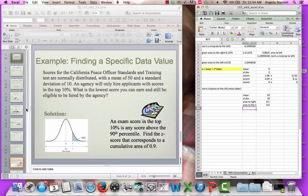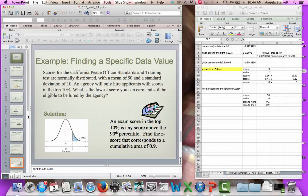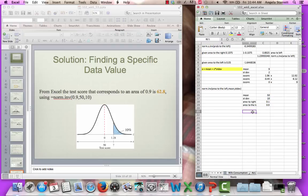We can use Excel. So I'm going to say equals norm.inv. We can see Excel always tells us what the inputs need to be. We need probability, mean, and standard deviation. That probability has to be to the left. So I type 0.9. I can type 50 for my mean and 10 for my standard deviation. And I get my test score of 62.8. Meaning the test takers have to score most likely a 63. We're assuming there's probably not decimals on this exam. They're going to have to score a 63 in order to pass.